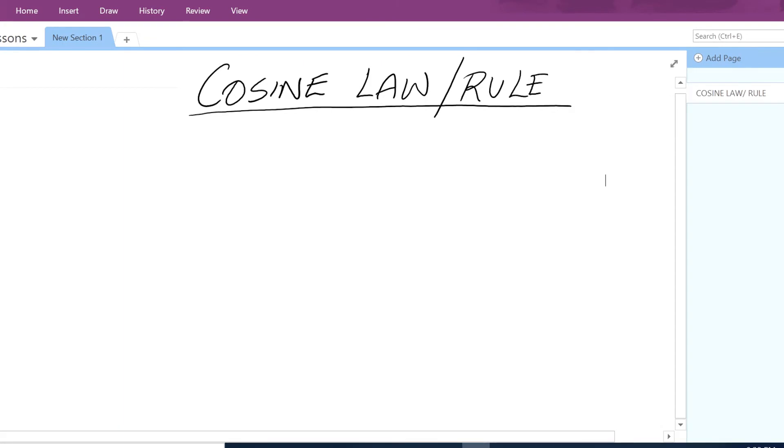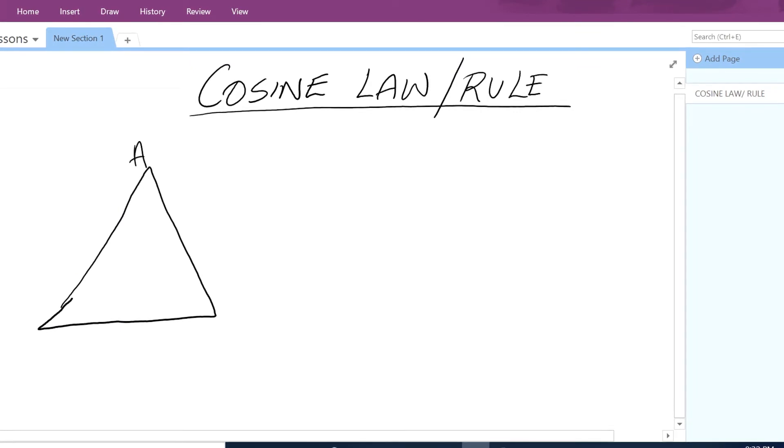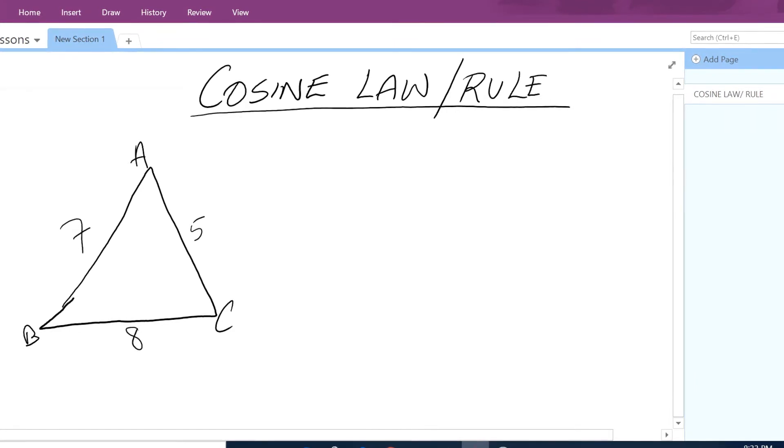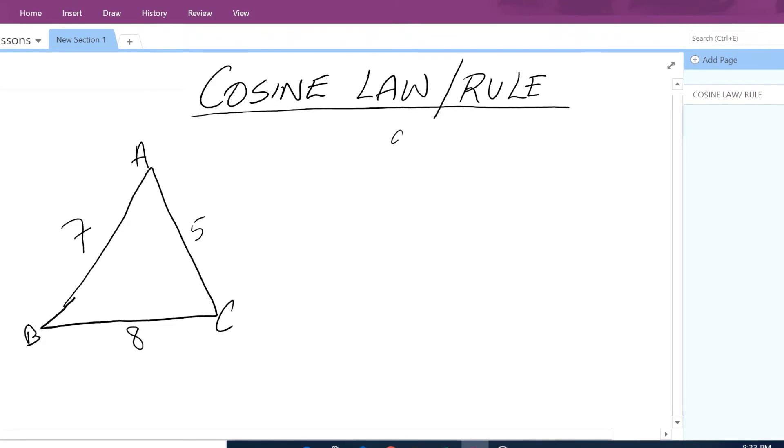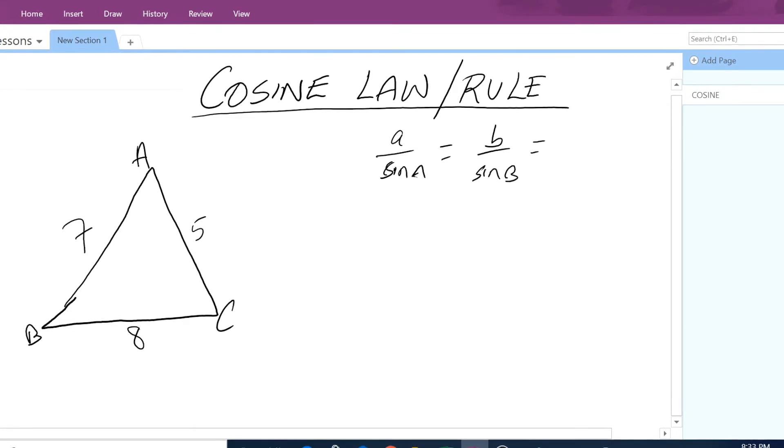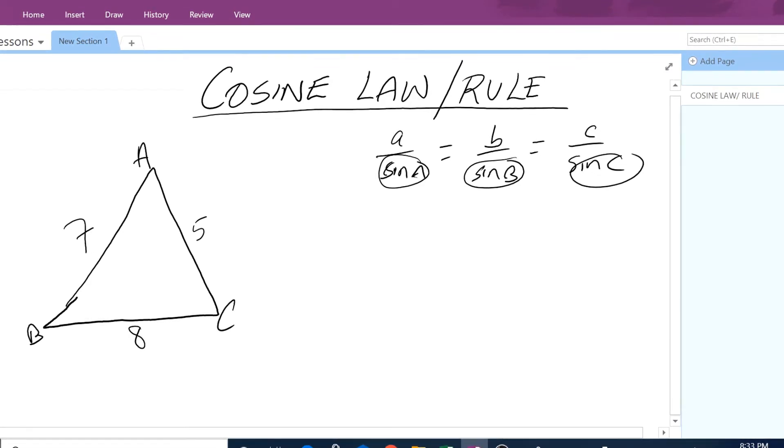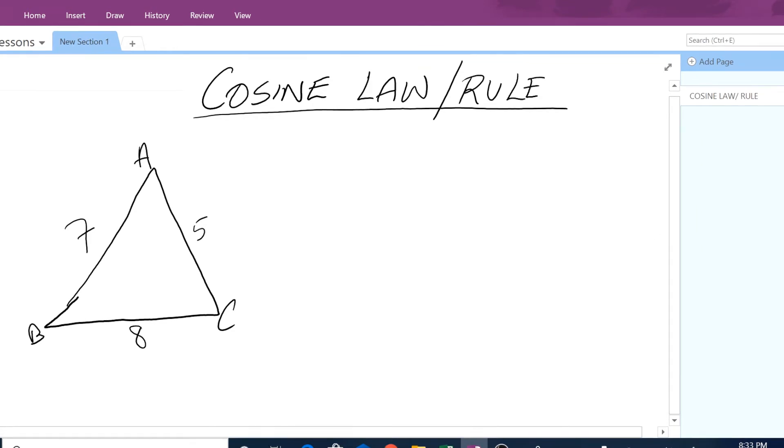Say you have a triangle A, B, and C where you have side c is 7, side b is 5, side a is 8. In this case, you cannot use sine rule. Why? Because sine rule is such that a over sine A equals b over sine B equals c over sine C. Because you don't have any angle given in this example, you cannot use sine rule. However,